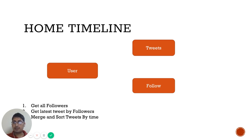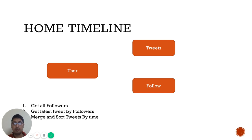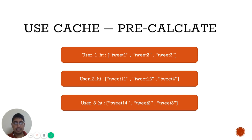The home timeline is more complex. It shows all tweets from users that a given user follows. To get these results, I join three tables: user table, tweet table, and follow table. First I join user and follow tables to get all people a user follows, then join with the tweet table to get their tweets. For a read-heavy application, doing these multiple joins repeatedly is a very costly operation.